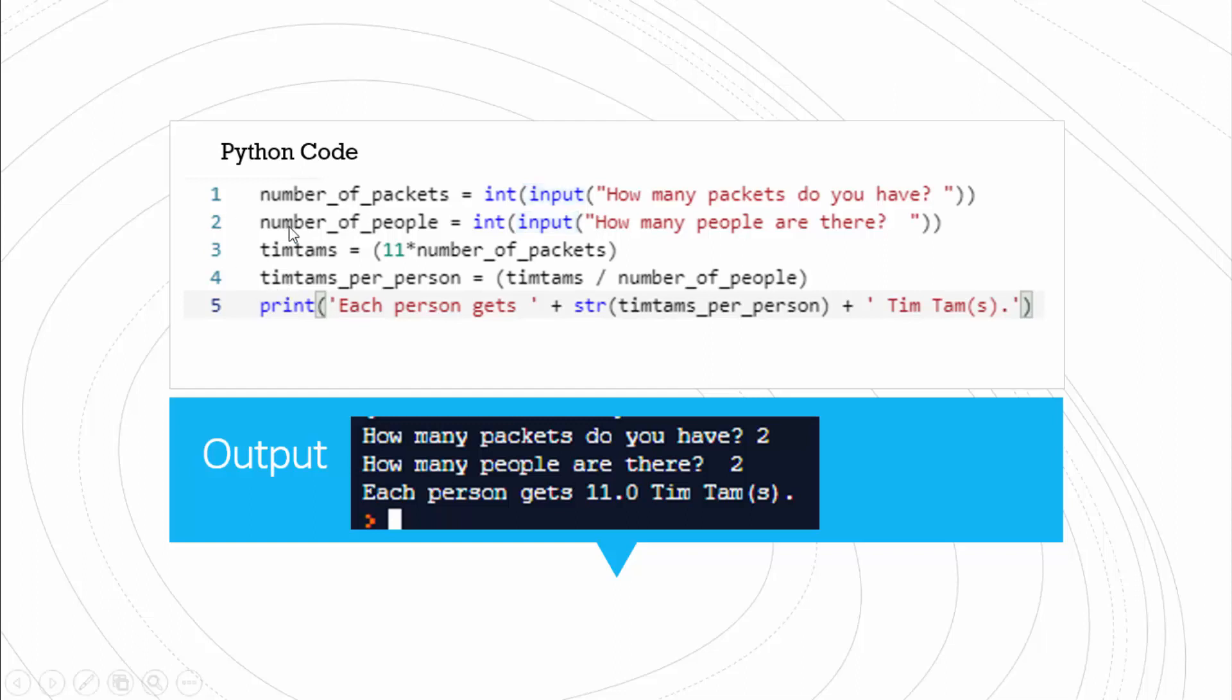So then our first little formula here is we need to find the total number of Tim Tams. So all we need to do is times 11 by the number of packets that we have. And then finally, the Tim Tams per person is the total number of Tim Tams divided by the number of people that you have.